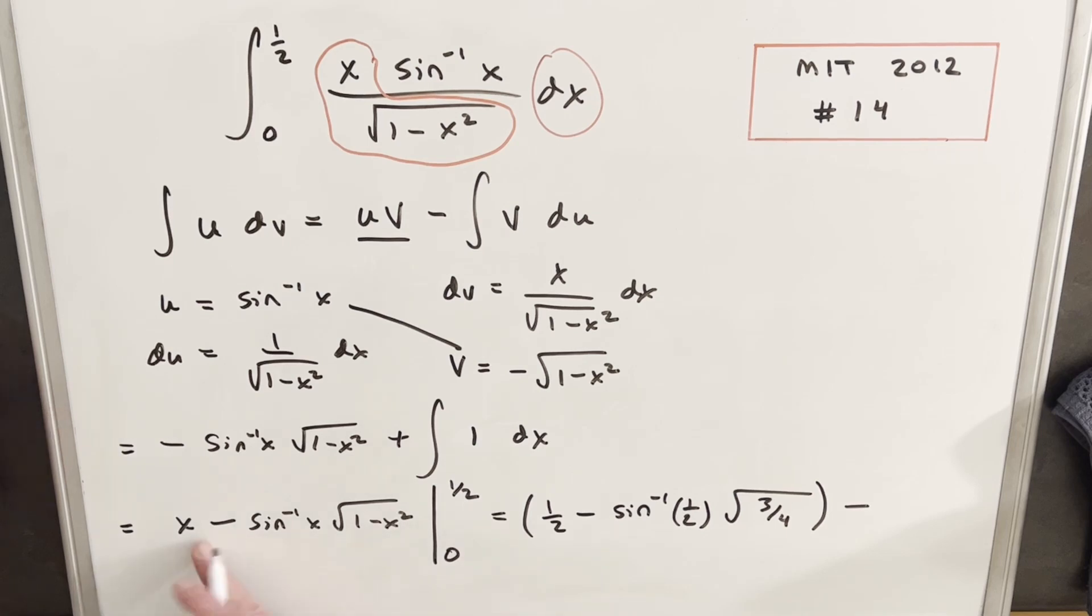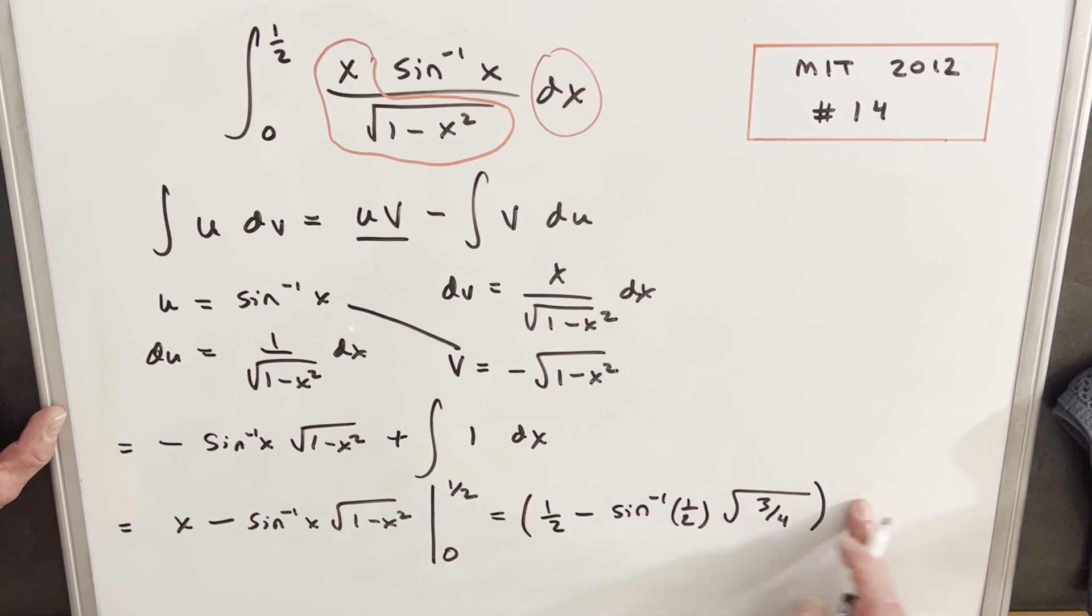Then we're going to have a minus. We plug in 0 here, that's just 0. We plug 0 in here, we get 1. We plug 0 in for arcsin, and that's just 0. So this whole piece right here is 0, so we're just going to take that away.